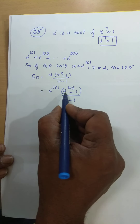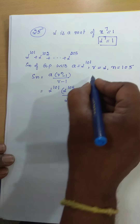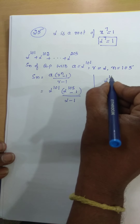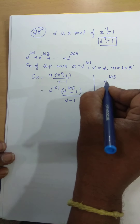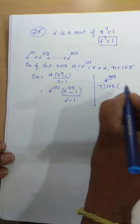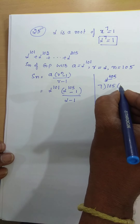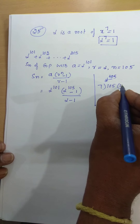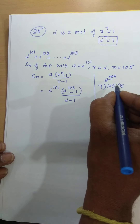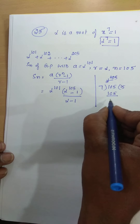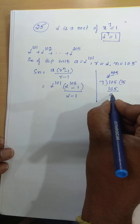Now, 105 — how many times does 7 divide into 105? 7 into 15 times — that becomes 105. So 15 times, the remainder is 0.